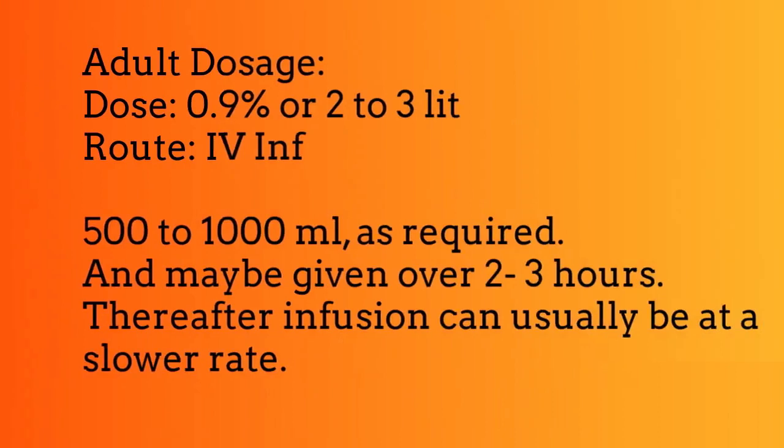Dosage — Adult dose: 0.9%, 2 to 3 liters. Route: IV, 500 to 1,000 milliliters as required, and may be given over 2 to 3 hours. Thereafter, infusion can usually be at a slower rate.